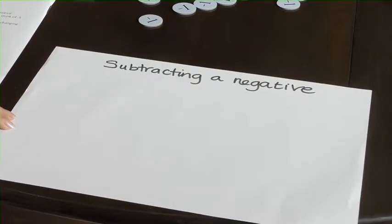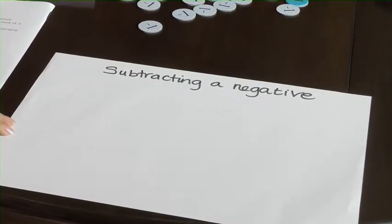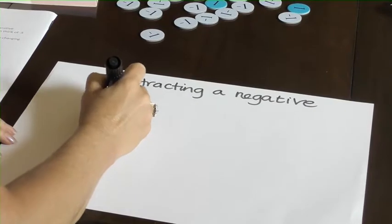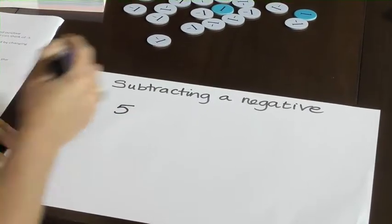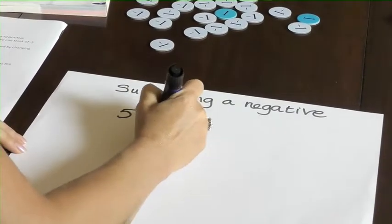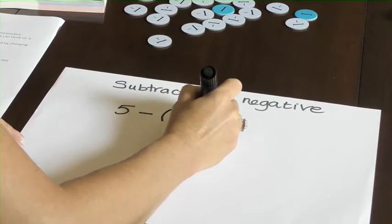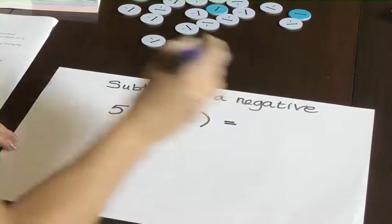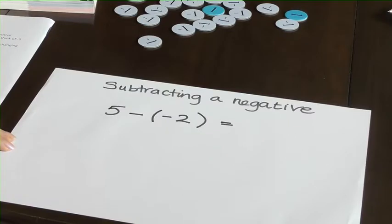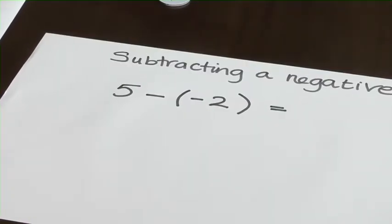Let's have a look at subtracting a negative. Let's consider evaluating 5 take away negative 2 and see what that is equivalent to. So let's model it using the disks.